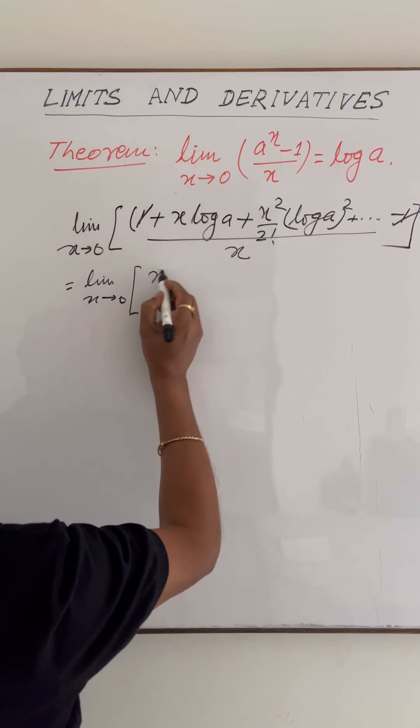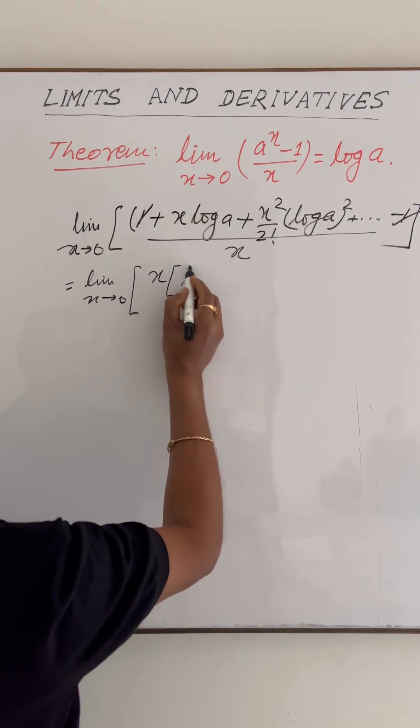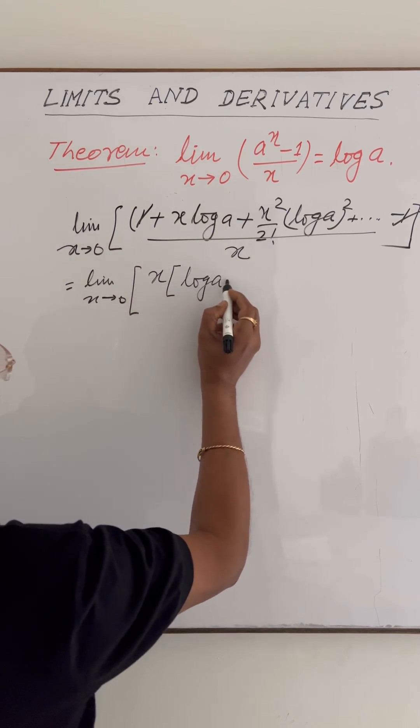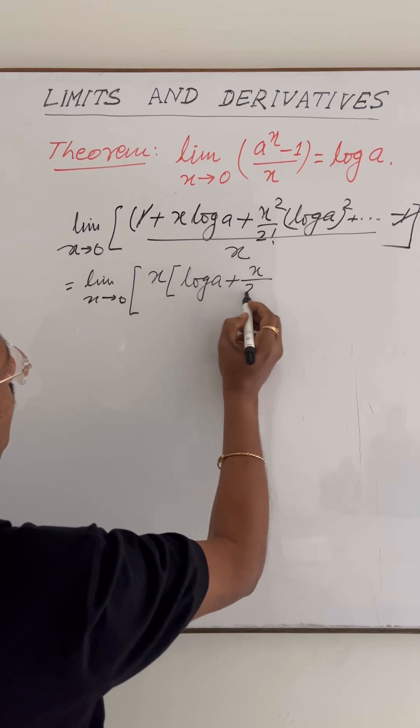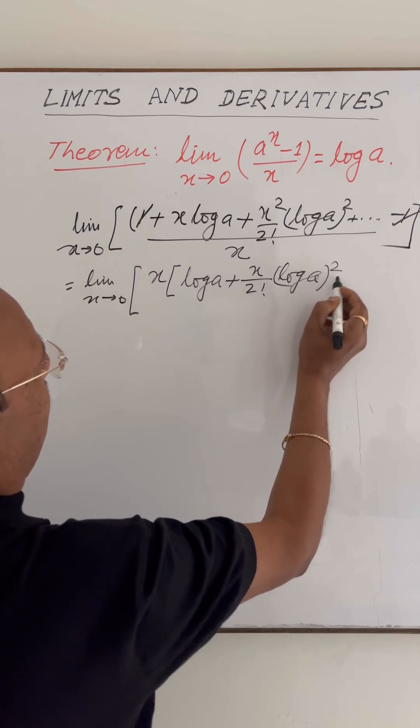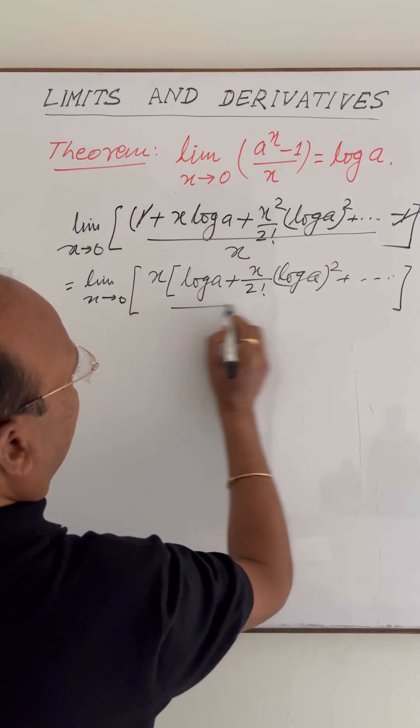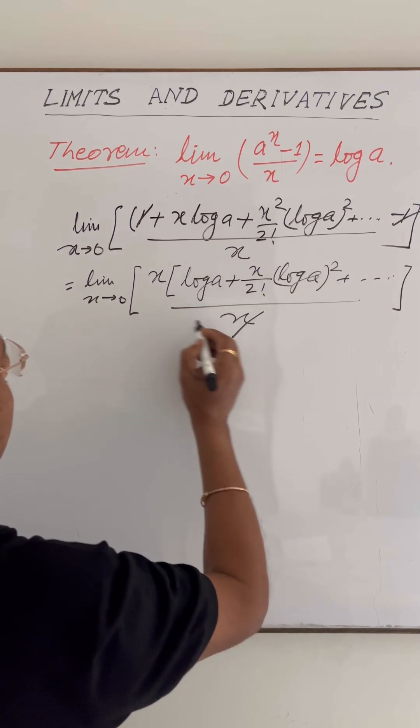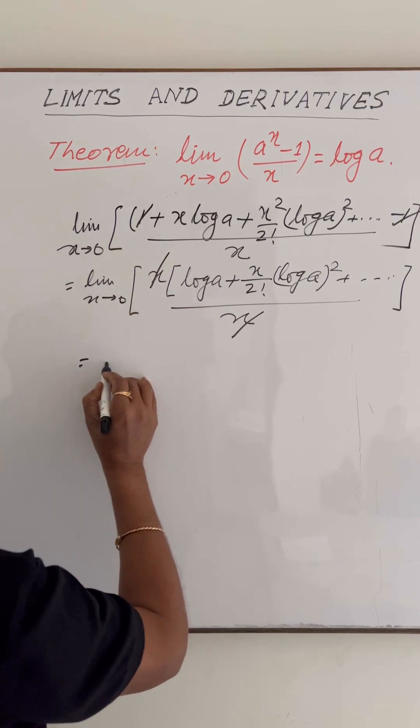We will get x times [log a plus (x/2!)(log a)^2 and so on] upon x. The x will be cancelled out. This is equal to limit as x tends to 0 of [log a plus (x/2!)(log a)^2 and so on].